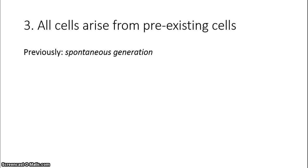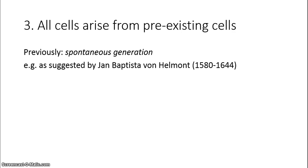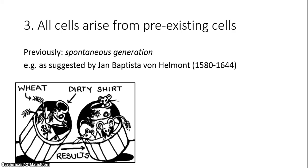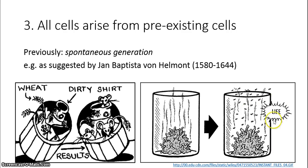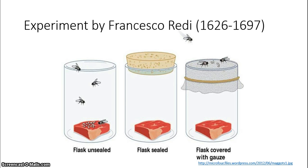The third tenet of the cell theory is that all cells arise from pre-existing cells. Before this, there had been the ancient Greek idea of spontaneous generation. Other scientists more recently advanced this idea as well, like Jan Baptiste van Helmont, who proposed that if you take some wheat or grain and mix in some dirty laundry, after about three weeks mice appear — that life could appear from garbage, effectively. This idea also extended to flies; flies seem to just appear out of rotting food and meat.